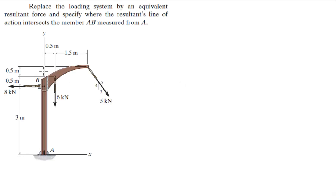All right guys, let's do this problem that says replace a loading system by an equivalent resultant force and specify where the resultant line of action intersects the member that goes from A to B measured from A.